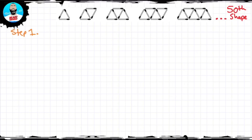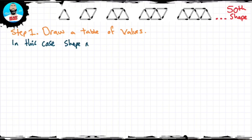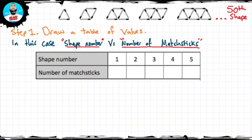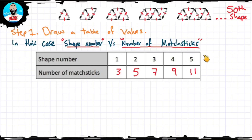Step 1: we're going to draw a table of values. In this case, we're going to draw the shape number versus the number of matchsticks. For the first shape, I've counted three matchsticks. For the second shape, I can write 5. For the third shape, I've got 7. For the fourth shape, I've got 9. For the fifth shape, I've got 11.